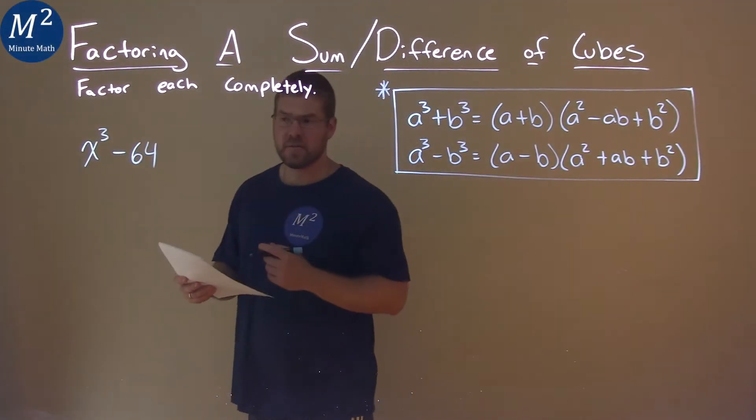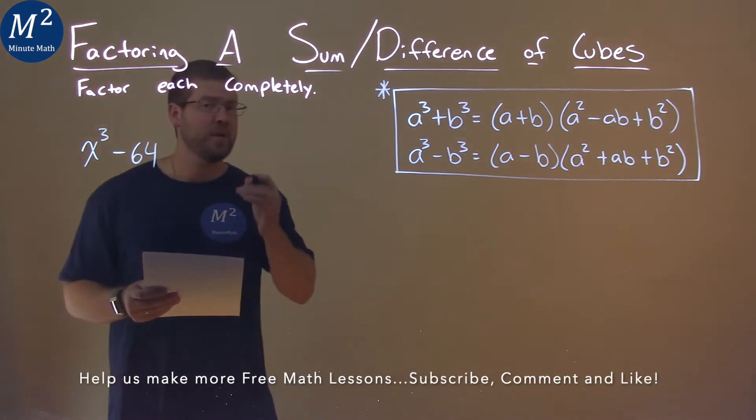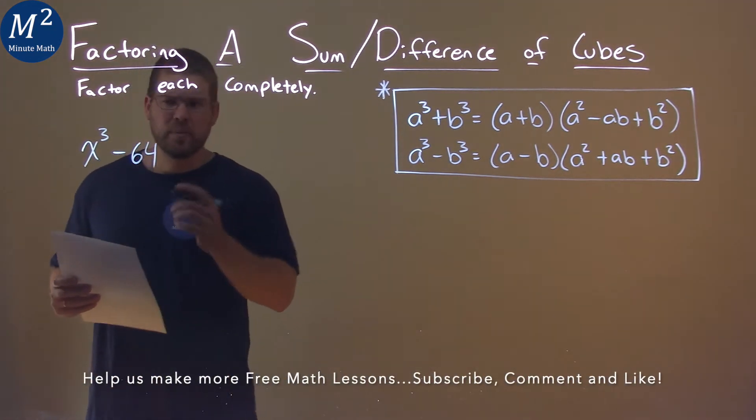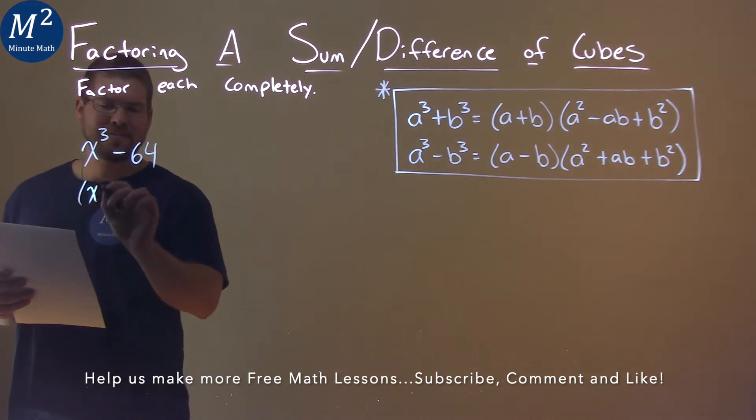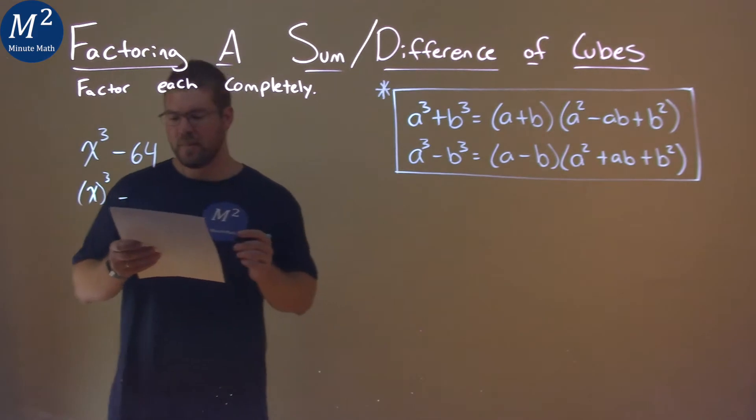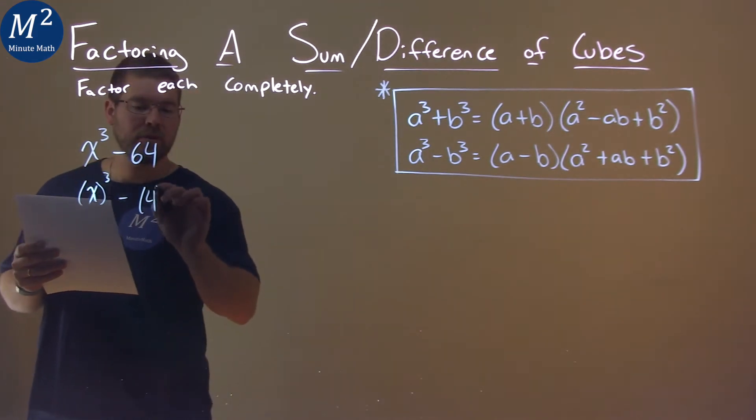We're getting this problem right here, x to the third minus 64, and we need to factor this completely. Well, can we break this down a little bit? x to the third is x to the third, minus 64 is the same thing as 4 to the third power.